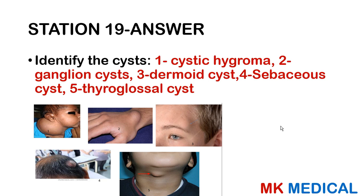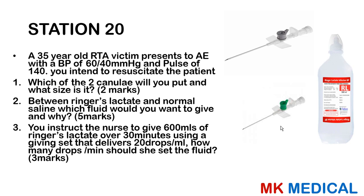Station 20: A 35-year-old RTA victim presents to adult emergency with a BP of 60/40 and pulse of 140. You intend to resuscitate. Which cannula will you use and what size? Between Ringer's lactate and normal saline, which fluid would you give and why? You instruct the nurse to give 600 mls of Ringer's lactate over 30 minutes using a giving set that delivers 20 drops per millilitre. How many drops per minute should she set the fluid?